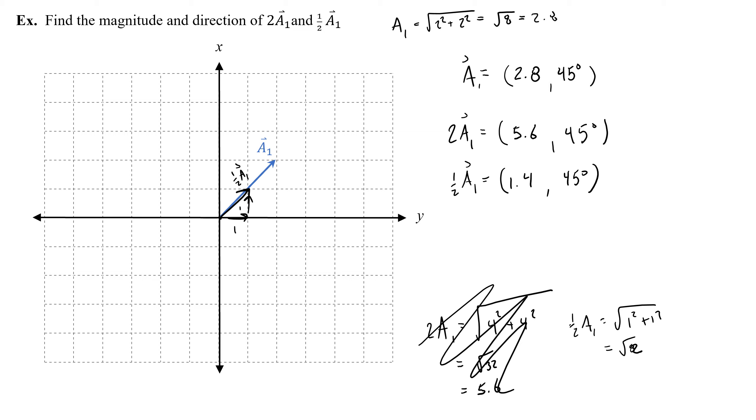So 1.4 and 45 degrees magnitude. So again, the angle is the same. The only thing that changes is the magnitude of the vector. From 2.8, we multiply it by 2, so it's 5.6. And when we halved it, it was 1.4.